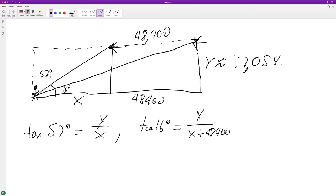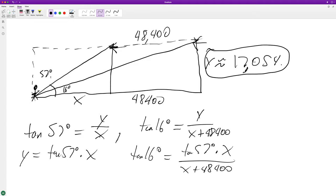You'd solve for y. So y equals tangent of 57 degrees times x. Then you would substitute this in, so tangent of 16 degrees equals tangent of 57 degrees times x over x plus 48,400. Once you get that in, you just plug it back in for y in the original equation, and you should get y equals this.